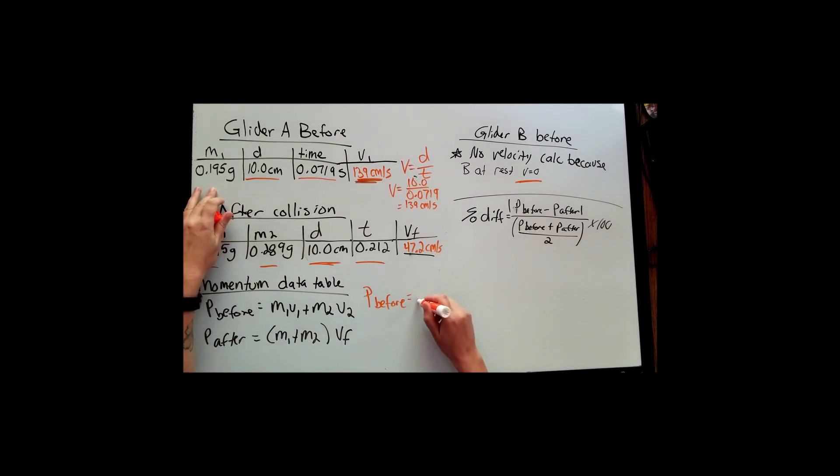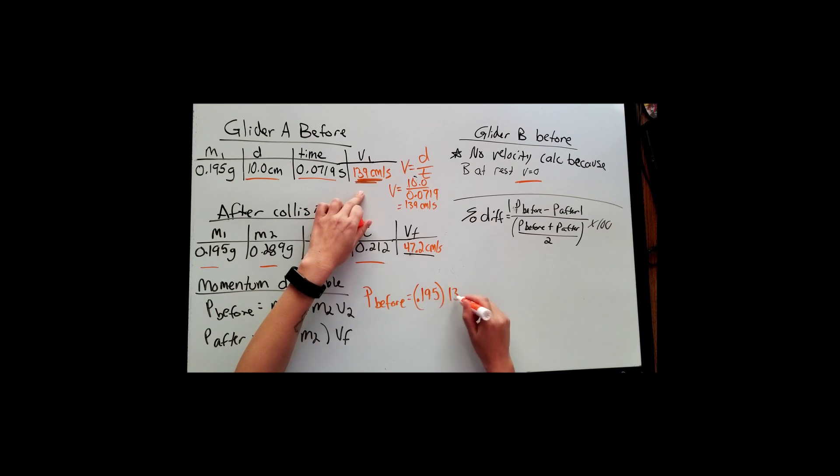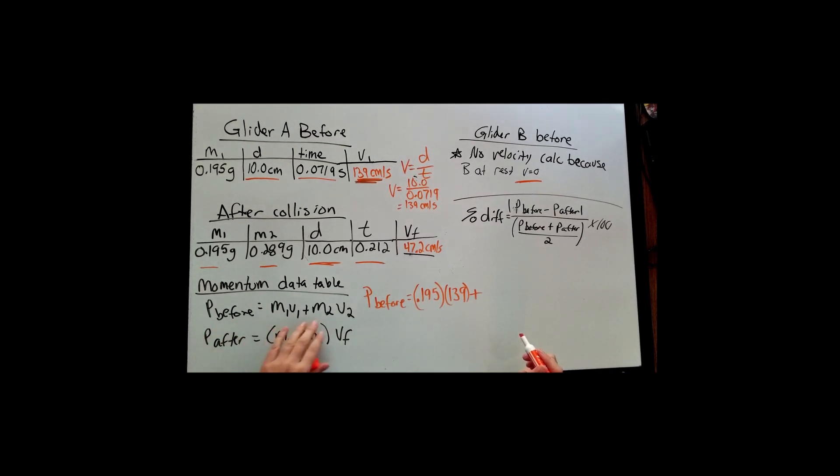Let me start with the before. So I want the mass of glider 1, 0.195, and I'm going to multiply that by the velocity we calculated, this V sub 1. So it's important to get the velocity correct because if you don't you're going to get the rest of the problems incorrect as well. So just be very careful when you are doing these calculations. So that's glider A, glider 1. So we're going to this table for glider 2. And the mass of glider 2, if you're looking at that table, is 0.289. The velocity, V sub 2, it's 0 because that glider was at rest.